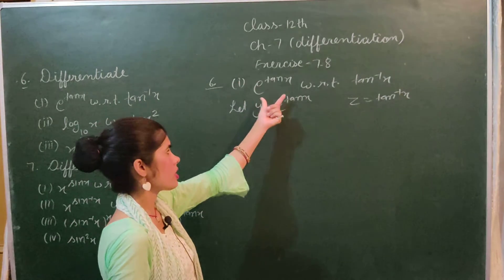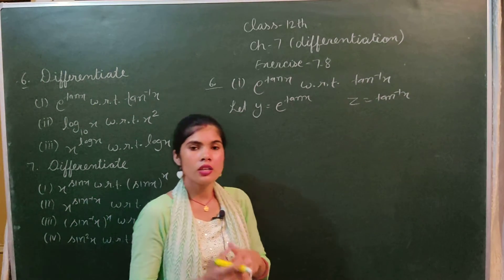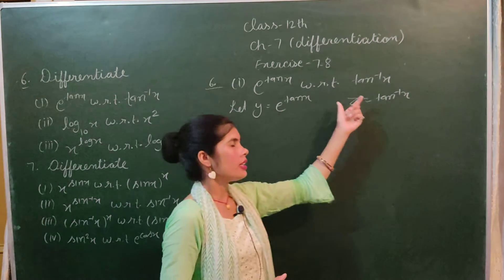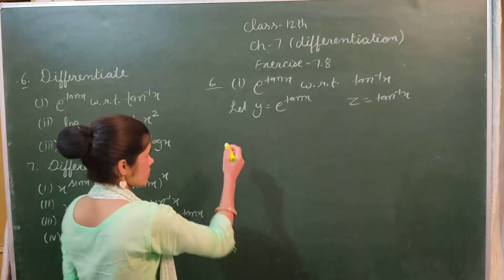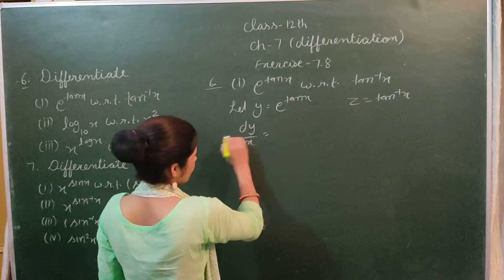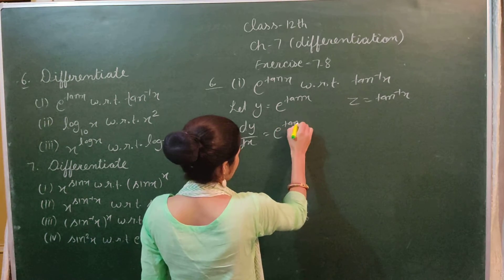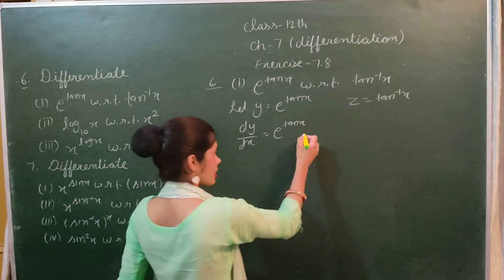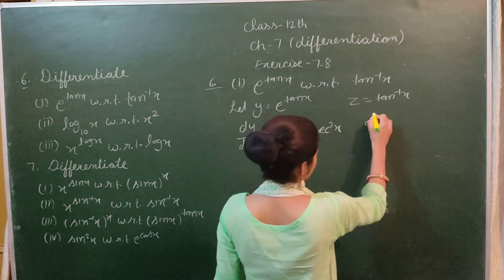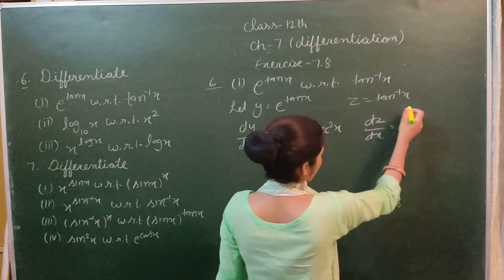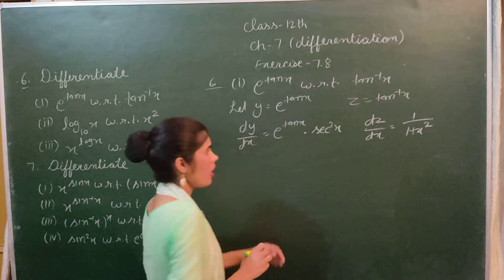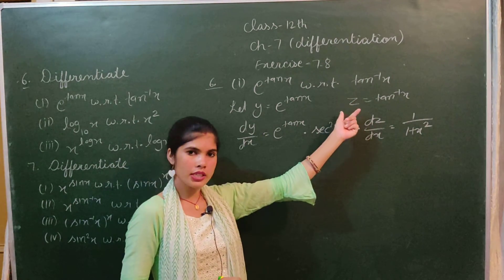We let both functions. After letting, we differentiate y with respect to x. We get e^(tan⁻¹x) times the differentiation of tan⁻¹x, which gives secant square x. Then differentiating z with respect to x gives 1 by (1 + x²).